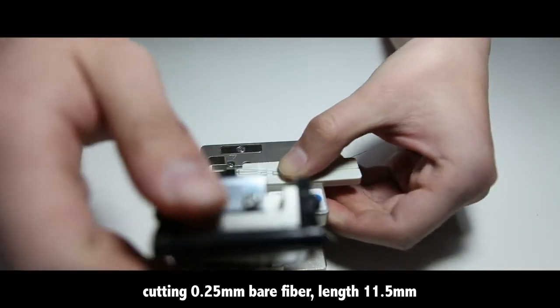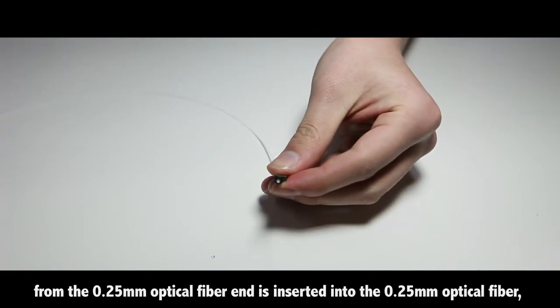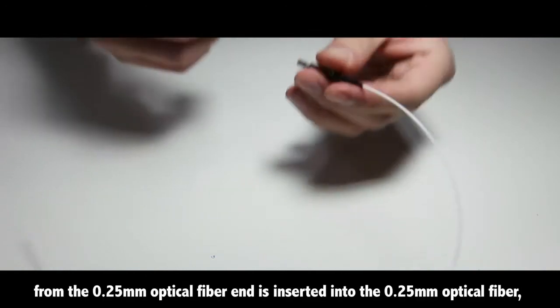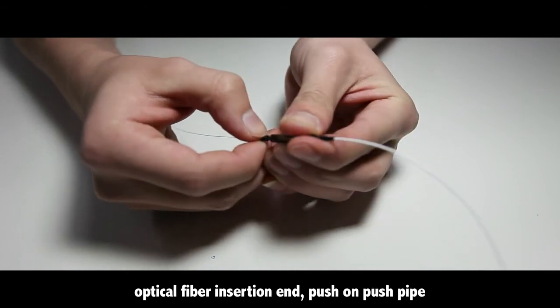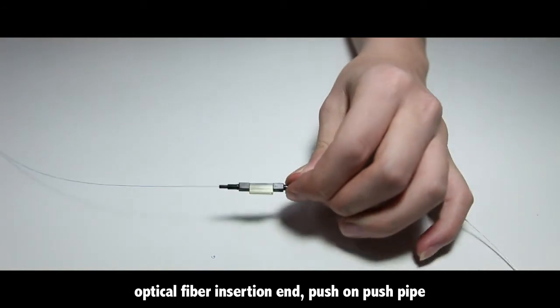Insert the fiber card into the cold catching guide, using the right 0.25mm card slot. Cut the 0.25mm bare fiber to a length of 11.5mm.